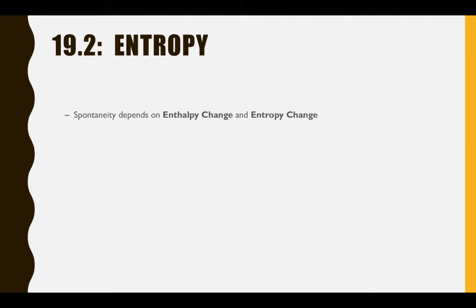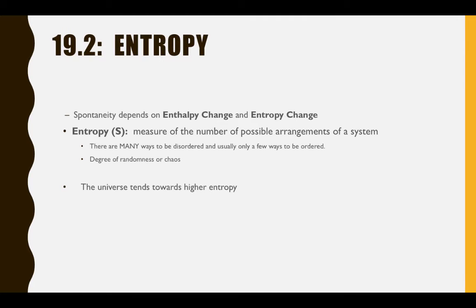Spontaneity depends on both the enthalpy change of a system and the entropy change of a system. Entropy, which is abbreviated with a capital S, is a measure of the number of possible arrangements of a system. Consider a simple system like a 100-piece puzzle — there are many, many ways for that puzzle to be disordered, but really only one way for it to be perfectly ordered. Entropy is often thought of as the degree of randomness or chaos, though it's more useful to consider it as the number of possible arrangements, since that's more meaningful and quantifiable.